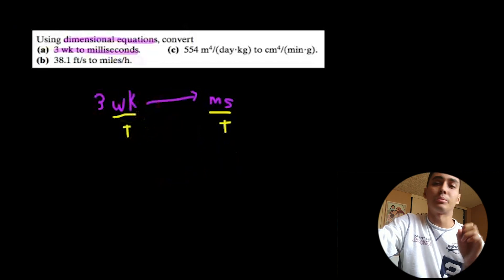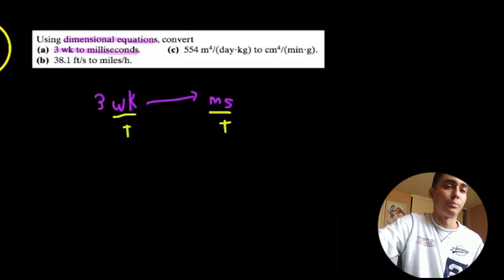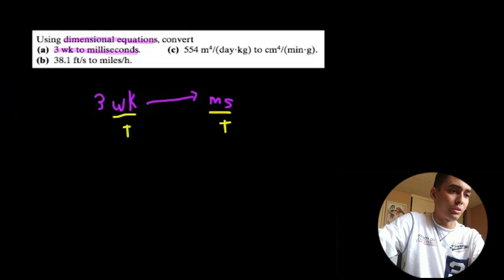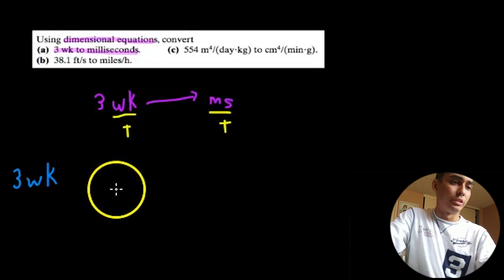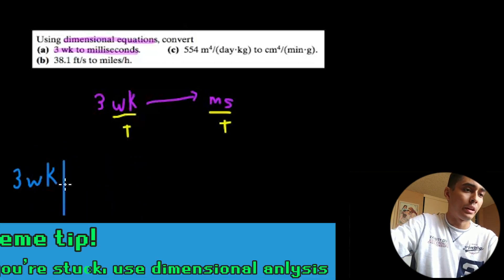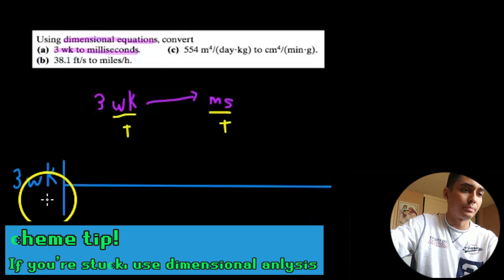That's very important because sometimes you're going to be doing some kind of calculation and you don't know what's wrong. And it's all because of the dimension. So what I do is I start with the given, which again is three weeks. And what I do is I do this little line here and I go all the way across.